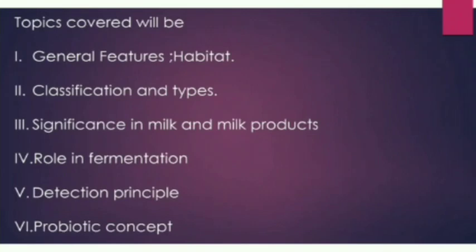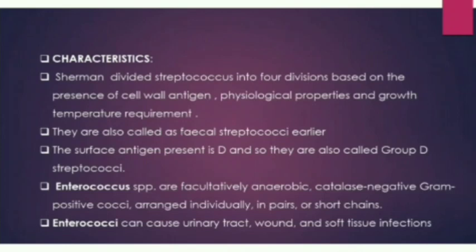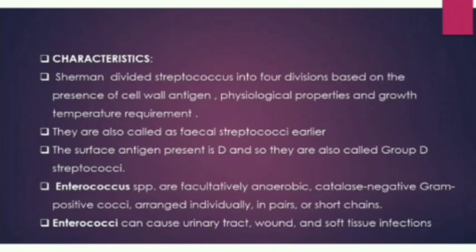I am Rishikesh, and I will explain the general features of Enterococci. Sherman divided Enterococci into groups based on range of cell wall and other parameters such as physical properties and growth temperature requirements. He placed Enterococci in Group D. Entero means they are generally found in the intestine of mammals and warm-blooded animals. They were earlier known as fecal Streptococci and are also called Group D Streptococci.